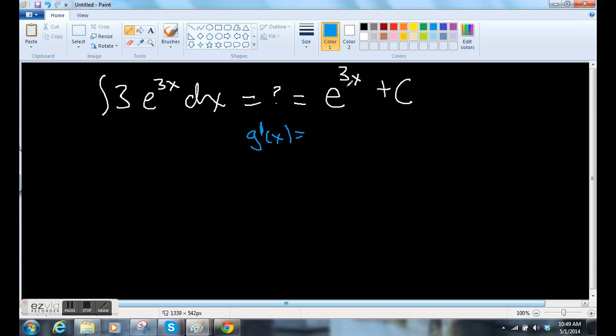But you want to check to see if you are correct. So take the derivative. Let this be some function. You know, g of x equals this. The derivative of this piece is going to be e to the 3x times, remember the derivative of this, 3 plus 0. And then you look at this and say 3 times e to the 3x. 3e to the 3x. Check. I'm good. You can move on to the next problem.